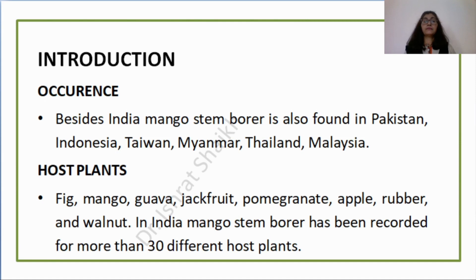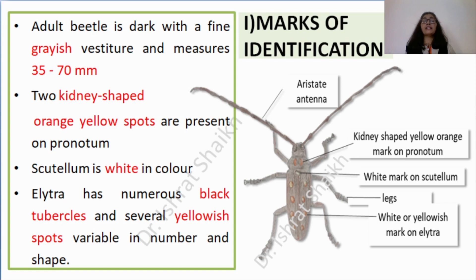Marks of identification: how are you going to identify whether the insect is mango stem borer or any other insect? We can do this if we know its external characters. The adult beetle is dark with fine grayish vestiger — meaning designs on the body — and measures 35 to 70 millimeters in length. The scutellum is white in color and small in size. There are two kidney-shaped orange-yellow spots on the pronotum. The elytra has numerous black tubercles and several yellowish spots variable in number and shape.